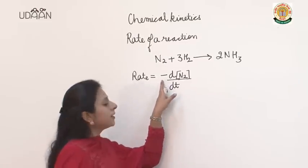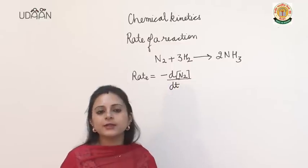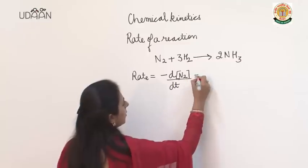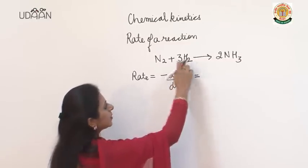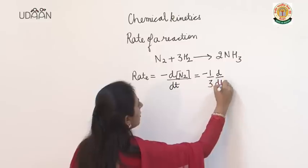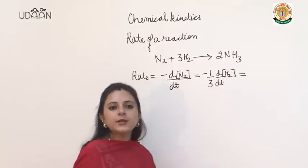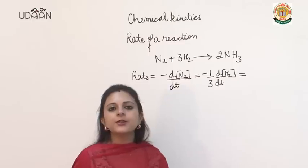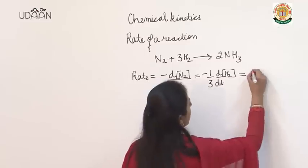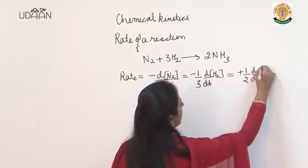Now why have we written this negative sign? Because the concentration of reactants is decreasing with time. Now here the stoichiometric coefficient is 3, so we write minus 1/3 d/dt of H₂. And ammonia is the product — the concentration of products when a reaction takes place is increasing with time, so we write plus 1/2 d/dt of NH₃.